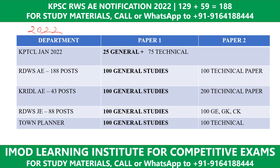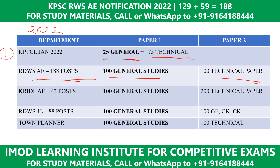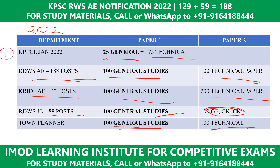So overall for January 2022 notifications: KPTCL is 25 GS and 75 Technical; RDWS is 100 General and 100 Technical; KRIDL is 100 General and 200 Technical; RDWS JE is 100 General Studies and 100 Technical. General Studies and Technical are the common components.